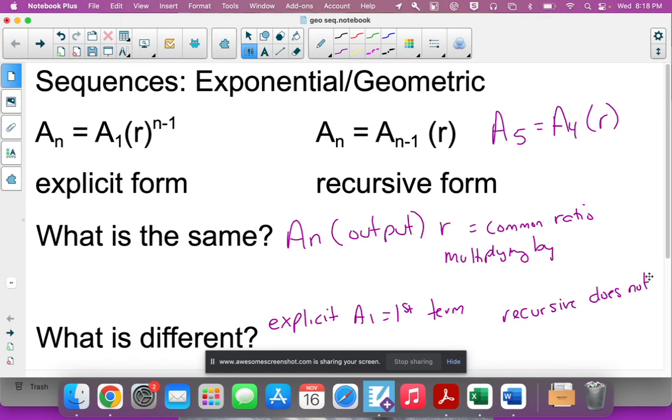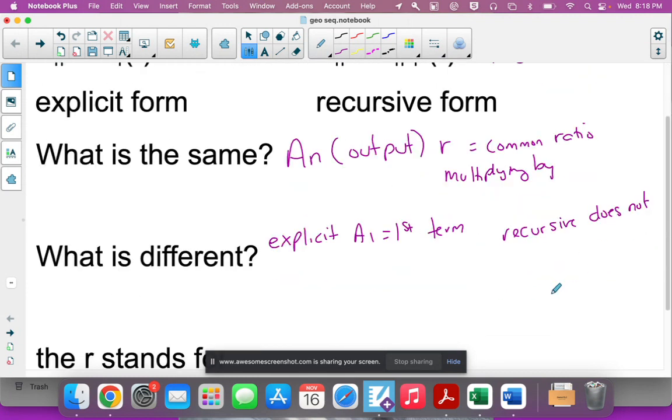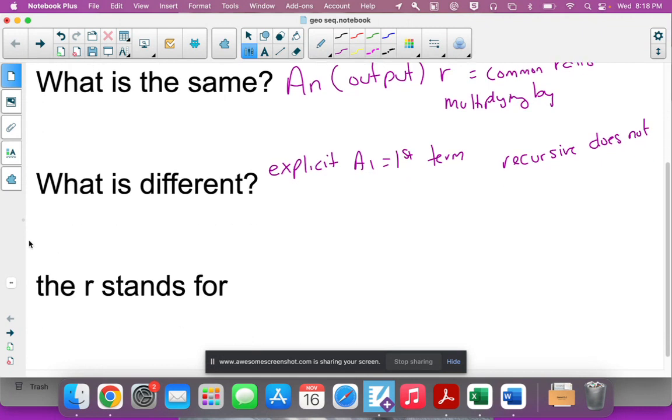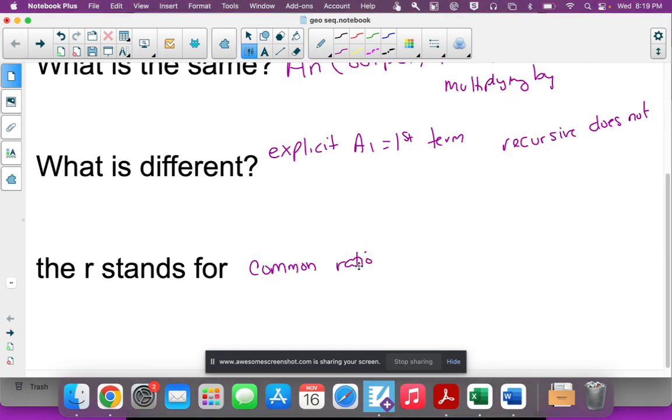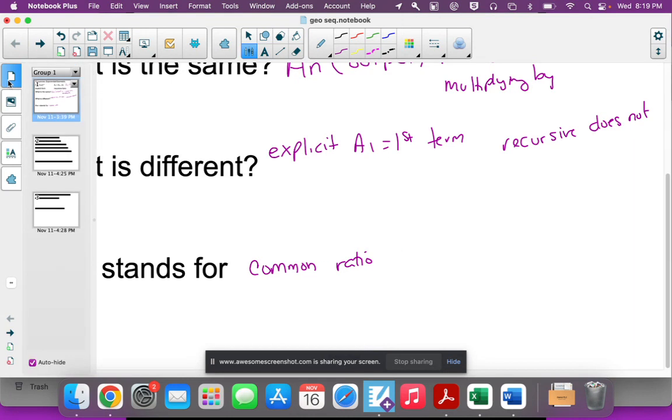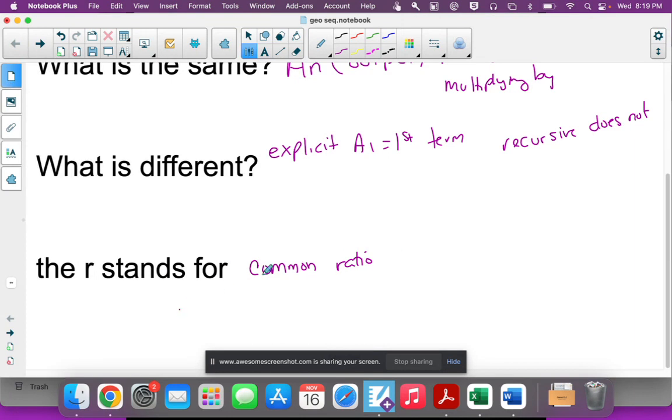You cannot depend on having that first term to make a recursive form or to figure out pieces from it, so you have to be careful. r stands for our common ratio, just like d stood for our common difference. That's really the only thing that's different - in arithmetic sequences we were adding, and this time we are multiplying by a common number.